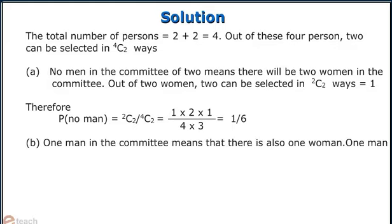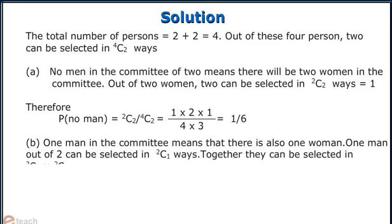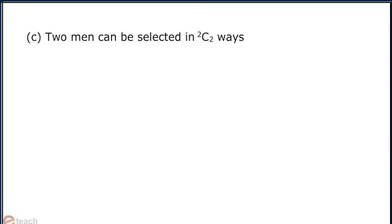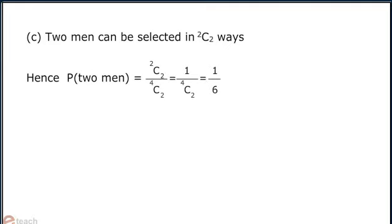b) One man in the committee means there is one woman. One man out of two can be selected in 2C1 ways, and together they can be selected in 2C1 into 2C1 ways. Therefore, probability of one man is 2C1 into 2C1 divided by 4C2, that is 2 into 2 divided by 2 into 3, which is equal to 2 by 3. c) Two men can be selected in 2C2 ways. Hence, probability of two men is equal to 2C2 divided by 4C2, which is equal to 1 by 6.